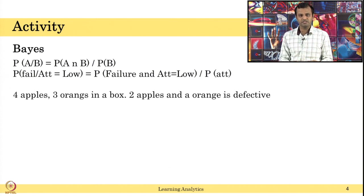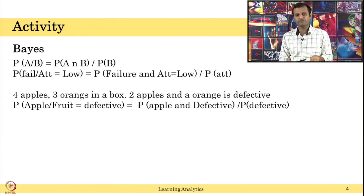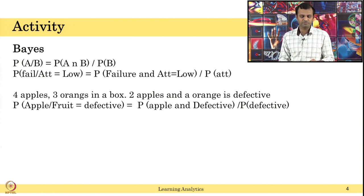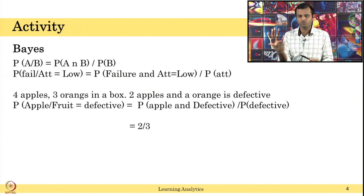Let us look at an example. This is a standard probability sum — there is a box which contains four apples and three oranges. Out of these, two apples are defective and one orange is defective. What is the probability that if you pick a defective fruit, that fruit will be an apple? Apple and defective is two, and the total defective fruit is three. There are three defective fruits available; if you picked one, how many of them can be apple — two out of three. So it is two by three, that is 66% probability.